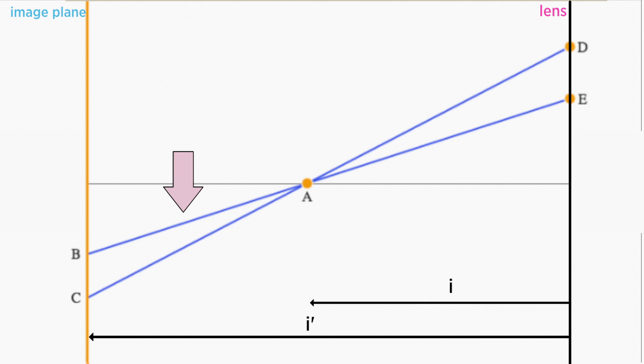Notice the triangle ABC is similar to the triangle AED. That means that the length BC divided by the length DE is equal to the length AB divided by AE. Let's call this equation 1.